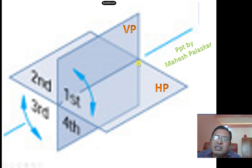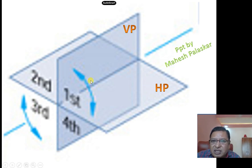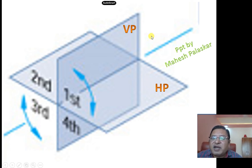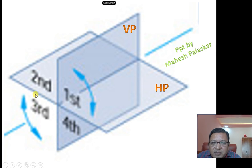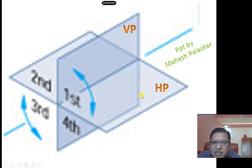The total space is divided into four parts or four quadrants due to the presence of HP and VP. For now, forget the profile plane — only consider HP and VP. The space above HP and in front of VP is the first quadrant. Above HP and behind VP is the second quadrant. Below HP and behind VP is the third quadrant. Below HP and in front of VP is the fourth quadrant.